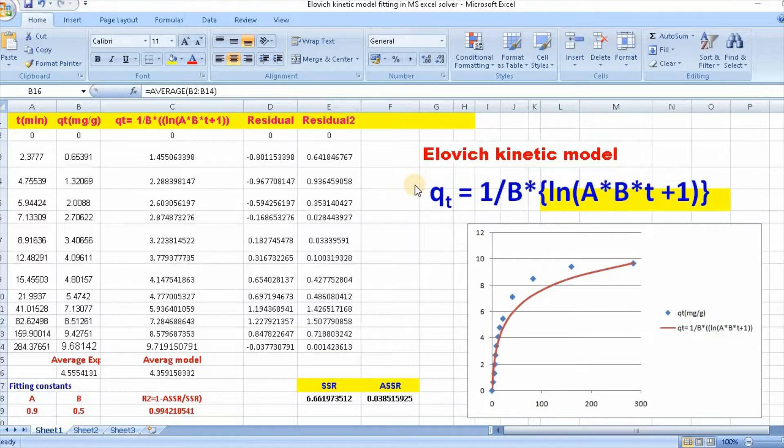Therefore, in this video, I would like to show you how to fit Elovich Kinetic model using Microsoft Excel solver. This video is very important, so please do not skip. Elovich Kinetic model can be written as qt equal to 1 by beta ln alpha beta t plus 1. Here I have used B for beta and A for alpha.